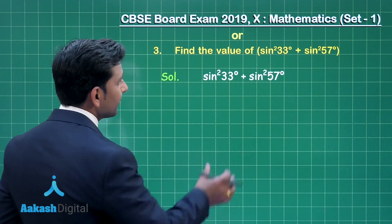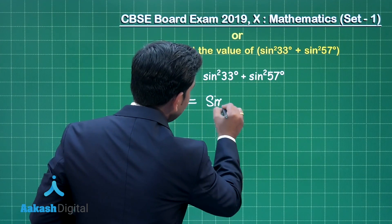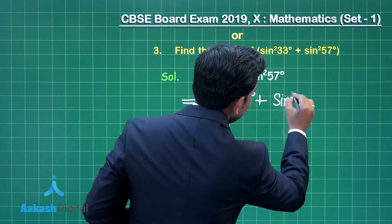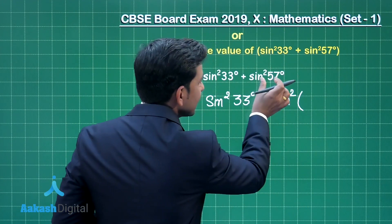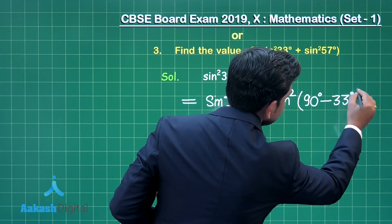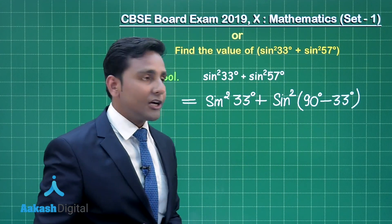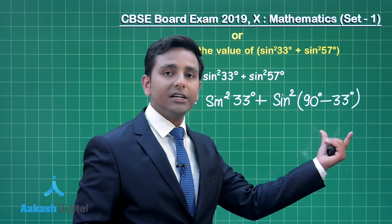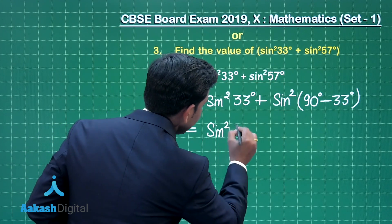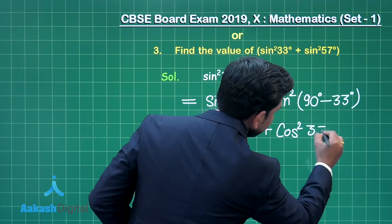Now let us solve this question. This is the given expression. We can write sin²33° + sin²57°, and we replace 57° by (90° − 33°). Using the complementary relation between different trigonometric ratios, we replace sin(90° − θ) with cos θ. So in the next step we obtain sin²33° + cos²33°.